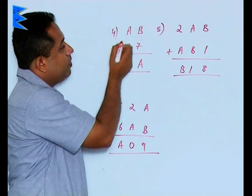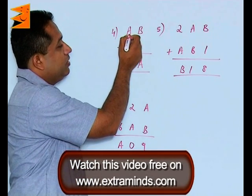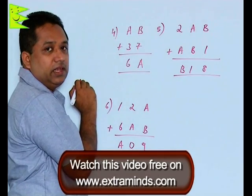Therefore, let us try out the value of A as 2. If we take the value of A as 2, then what is going to happen? This will be 2. 2 plus 3 is 5. So there is a possibility of 1 getting carried over.